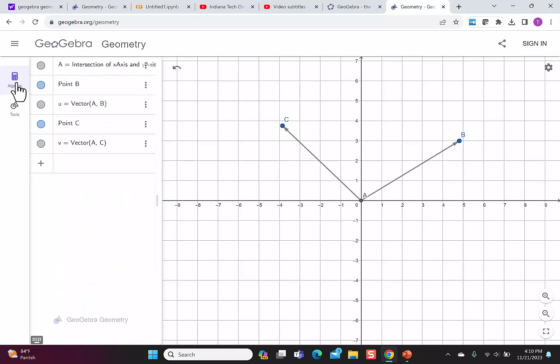I can go over to Algebra and then click on any of the points. So I'm going to click on B and it shows me it's 4.8 and 2.99.